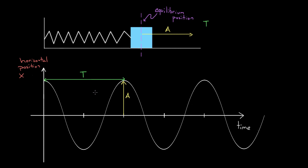A lot of times you also need the equation. You might want to know: what equation would describe this graph? This graph represents the horizontal position x — how far the mass has been displaced from equilibrium — as a function of time. We want a function where you feed in any time you want, and it spits out the value of the position of the mass, which should agree with what the graph is showing.